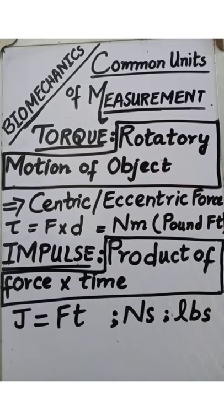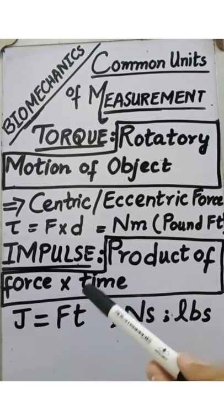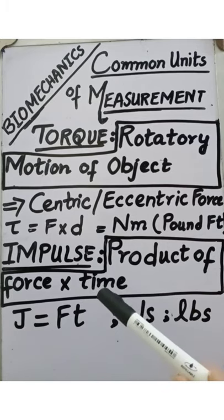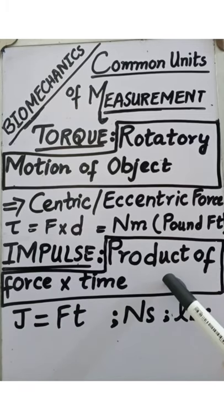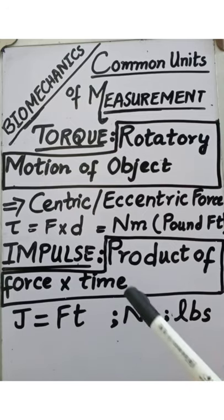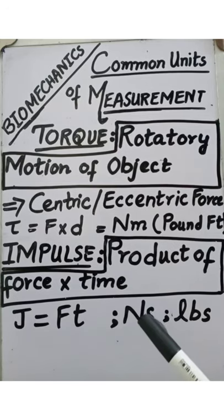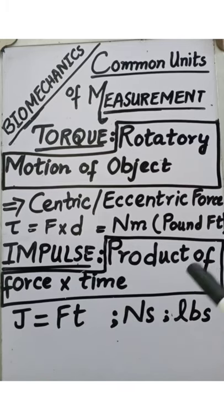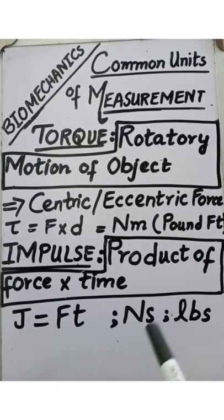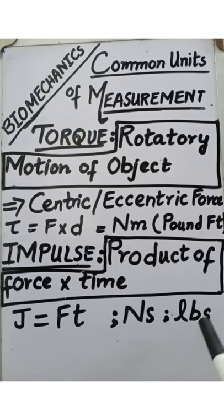The next measurement is impulse. What is impulse? When force is applied on an object, it is not only the force that determines how the object moves — it is also the time. How much time we apply force on an object determines that object's movement. Impulse is the product of force and time. The abbreviation for impulse is J. Its unit is Newton second, because force is expressed in Newton and time is expressed in seconds. The English unit is lb seconds, where lb (pounds) is the English unit of force.